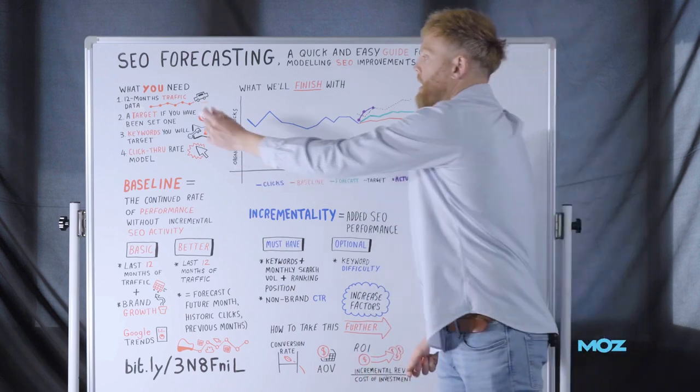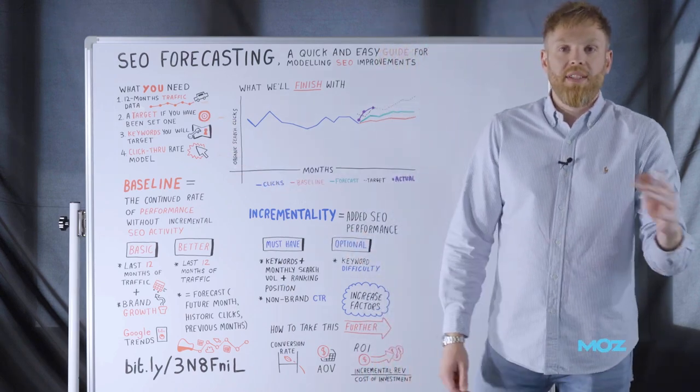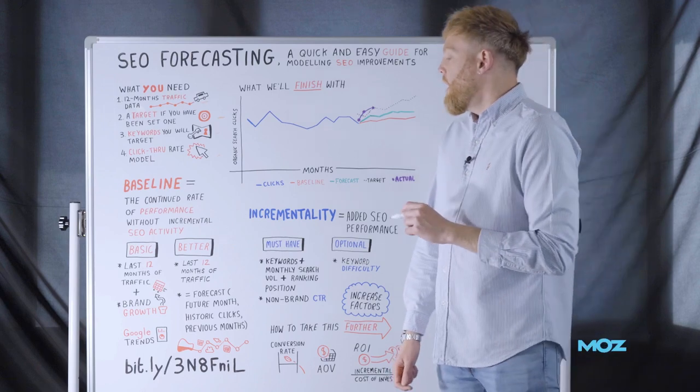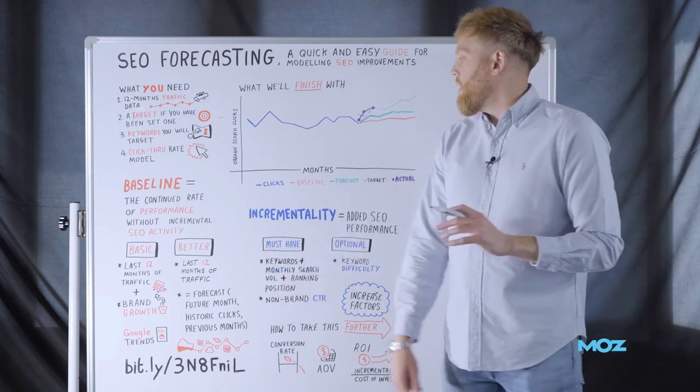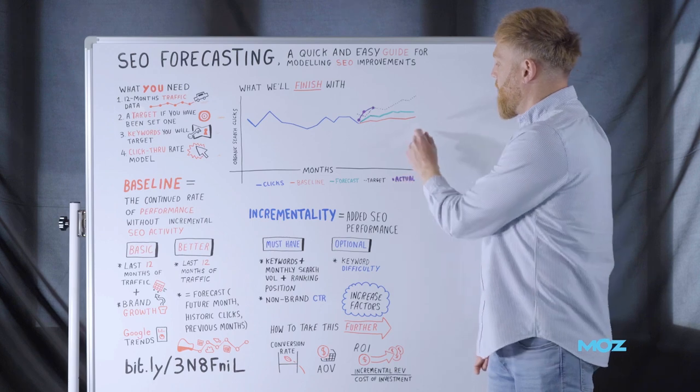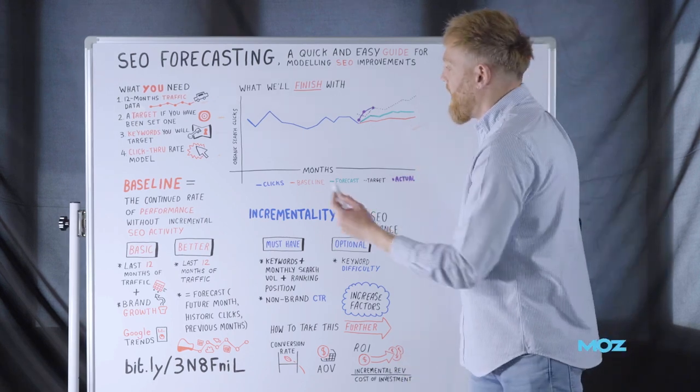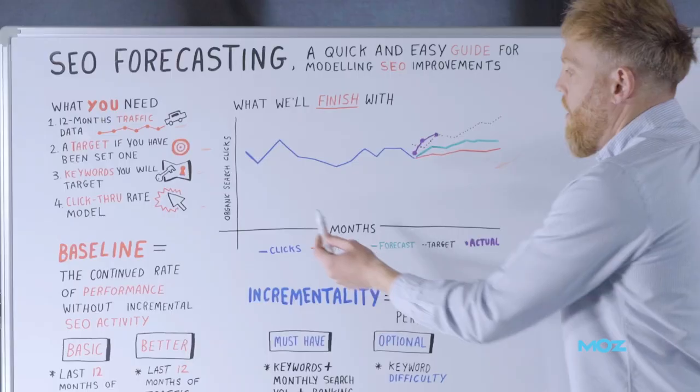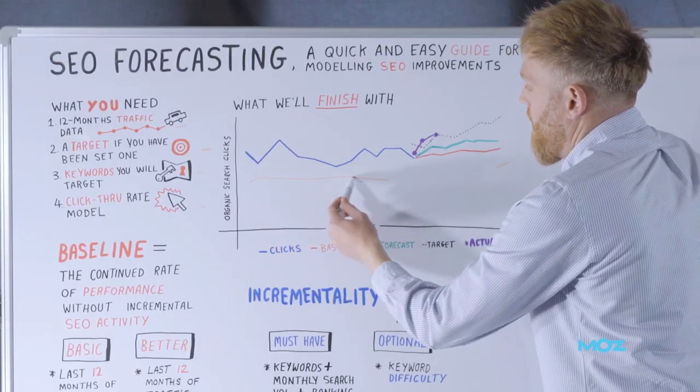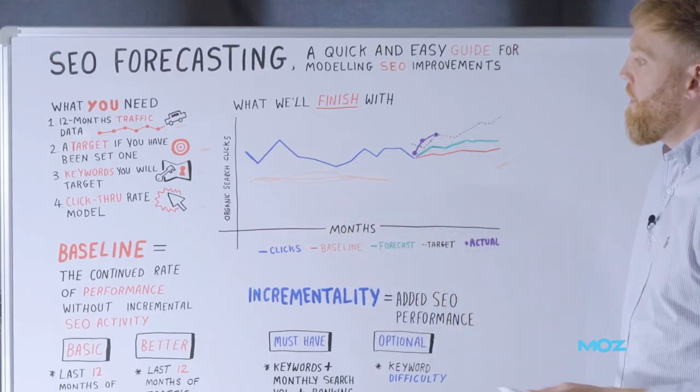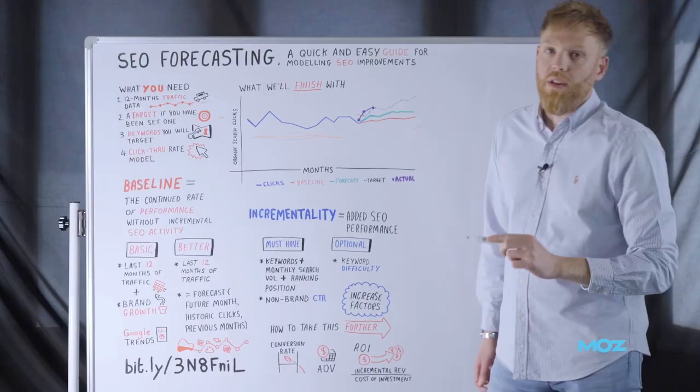So those are four things that you'll need before you set out on this journey. What we'll end up with when you've gone through this process is a graph like this. Very clear demonstration of what we've achieved over the last 12-month period from that traffic data.